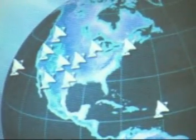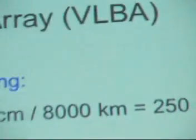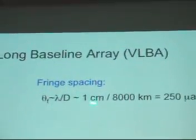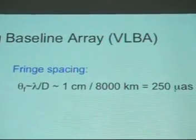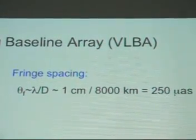So you get very high angular resolution. If you observe, for example, at one centimeter wavelength, which I gave you earlier, with 8,000 kilometer baselines you can synthesize—you get a beam or response of about a milliarcsecond. The fringe spacing or resolution of the telescope at one centimeter wavelength, 8,000 kilometer telescope, gives you about a quarter of a milliarcsecond, here 250 microarcseconds.